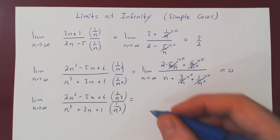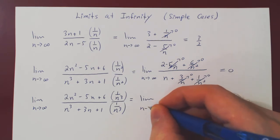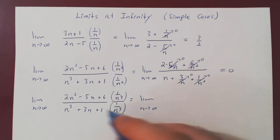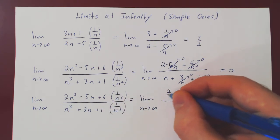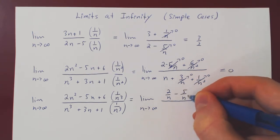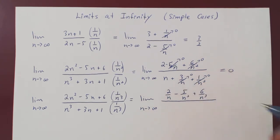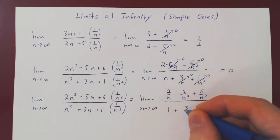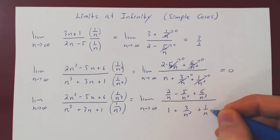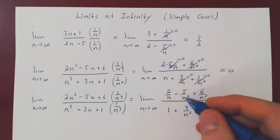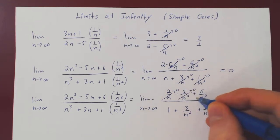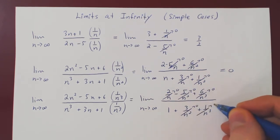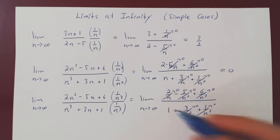Let's see what happens in this case. So multiply across by 1 over n cubed, and so you'll get on the numerator 2 over n minus 5 over n squared plus 6 over n cubed, over, same thing here, multiply across by 1 over n cubed, over 1 plus 3 over n squared plus 1 over n cubed. Now 2 over n, 5 over n squared, 6 over n cubed, 3 over n squared, 1 over n cubed, they all shrink to 0. And we're left with 0 over 1, which is of course 0.